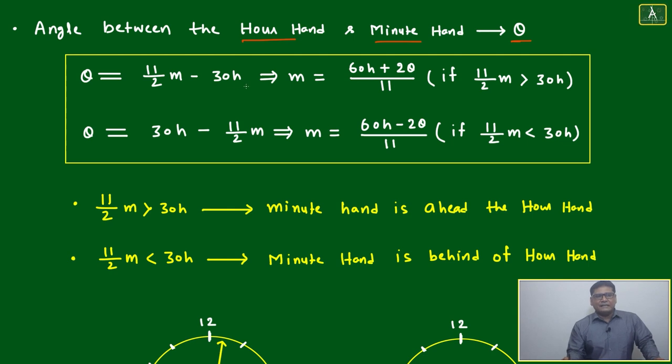If theta is 30 degrees, we always get two values. The same concept applies twice: theta equals 11 by 2 m minus 30 h. This is applied if 11 by 2 m is greater than 30 h, or we just reverse it because we're measuring the angle.